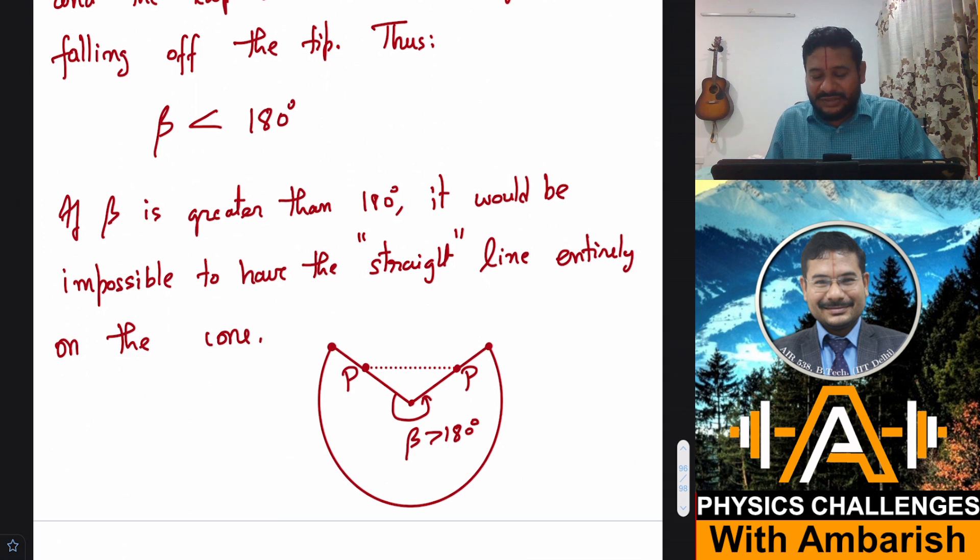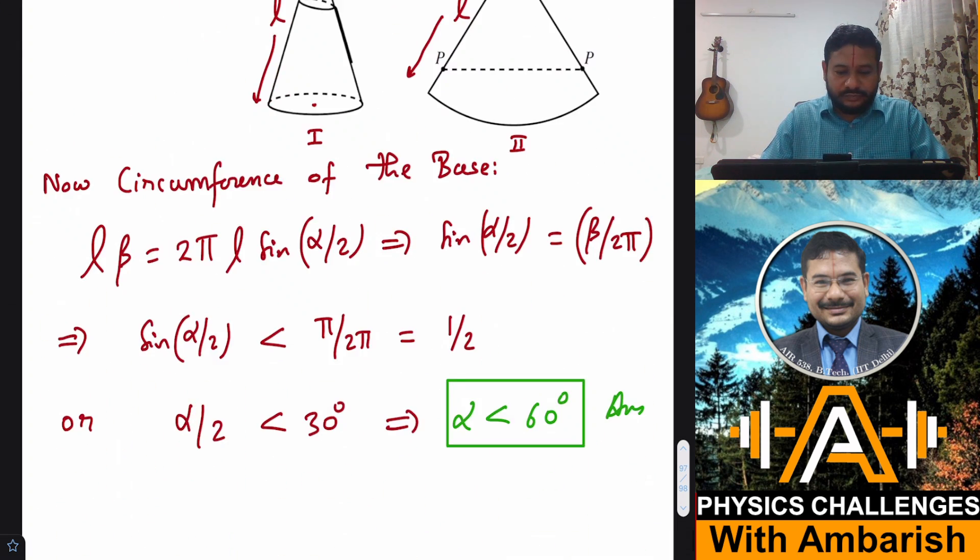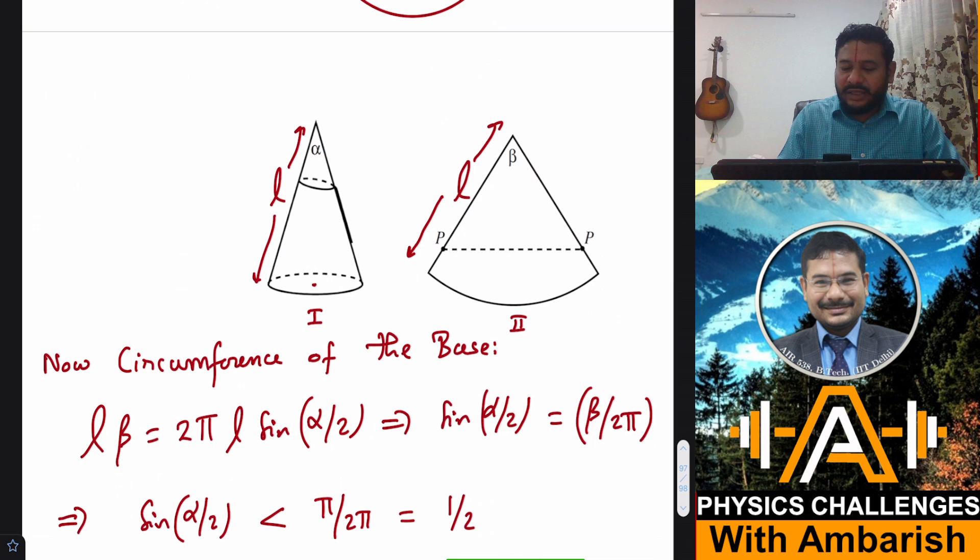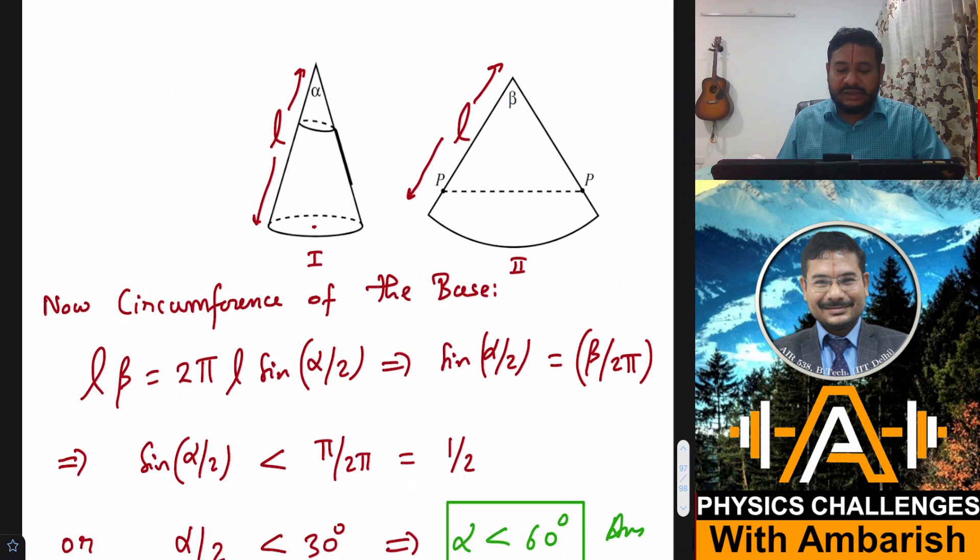So beta just cannot be more than 180 degrees. If you understand that, then the rest of it becomes very simple. So now I know that beta has to be less than 180 degrees. So what's the corresponding constraint on alpha that I can work out using simple geometry?